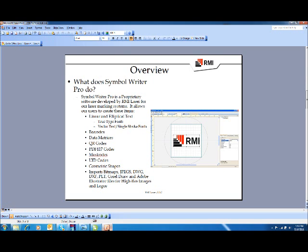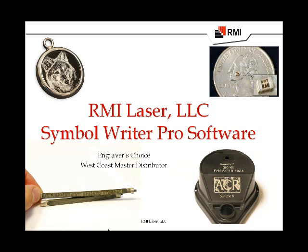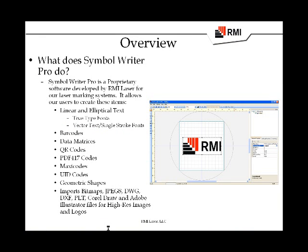It has linear and elliptical text, or arc text, runs from TrueType fonts, and has different sorts of vector files. We do barcodes, data matrix, QR codes, PDs, maxi codes, UIDs, different shapes, and we import all kinds of files, which allows us to paste, copy, and import files from other softwares and run the system.